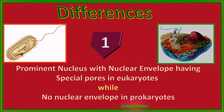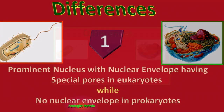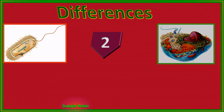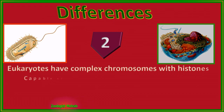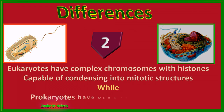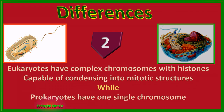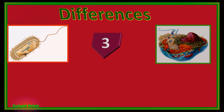Number ten is your turn — tell the tenth similarity in the comments, it's very simple! Now let's talk about differences. Number one: a prominent nucleus with a nuclear envelope having special pores is present in eukaryotes, while there is no nuclear envelope in prokaryotes.